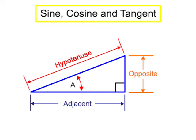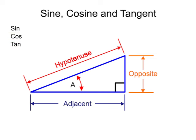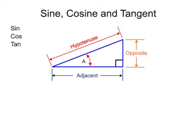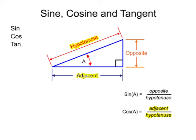Sine, cosine, and tangent are the three main functions in trigonometry, often shortened to sin, cos, and tan. These functions relate the ratio of the sides of a triangle to its angles. The sine of an angle is equal to the ratio of its opposite side and hypotenuse. Cosine is equal to the ratio of the adjacent side and hypotenuse. And tangent is equal to the ratio of the opposite side and the adjacent side.